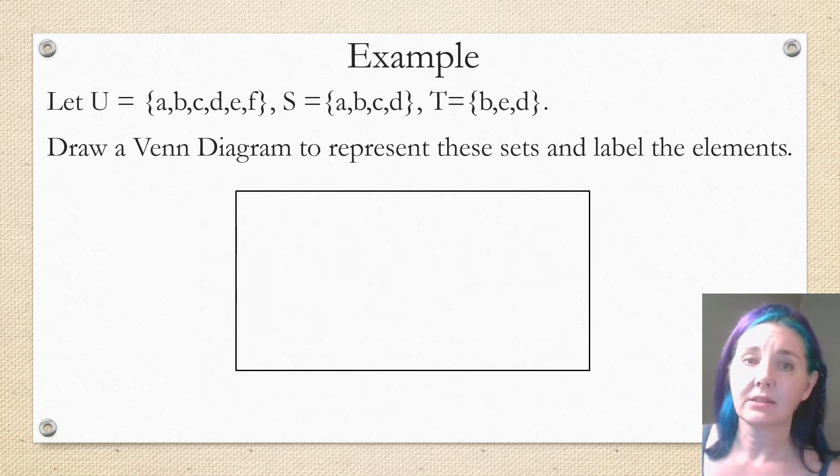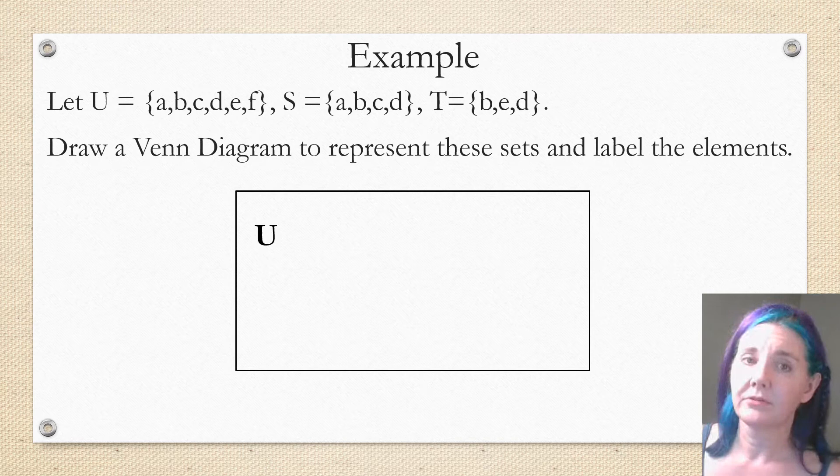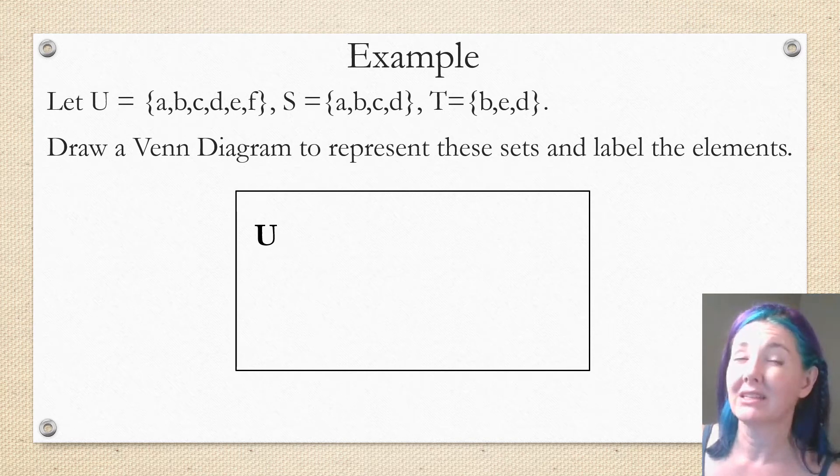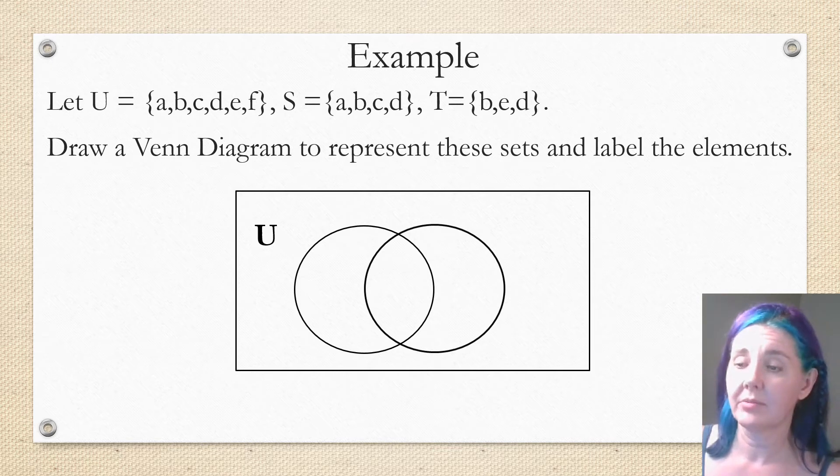So you always start with a rectangle for the universal set U. Then you need a circle for each of the sets. In this case, we're going to need a two-set Venn diagram. So we have two circles. They have to overlap in case there are elements in common. You're going to label one of them S and one of them T.